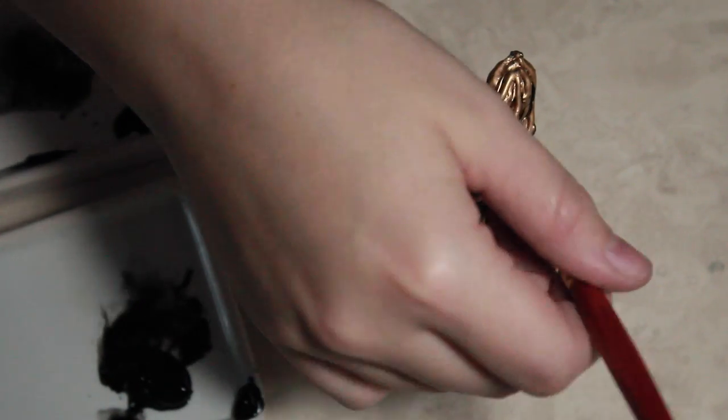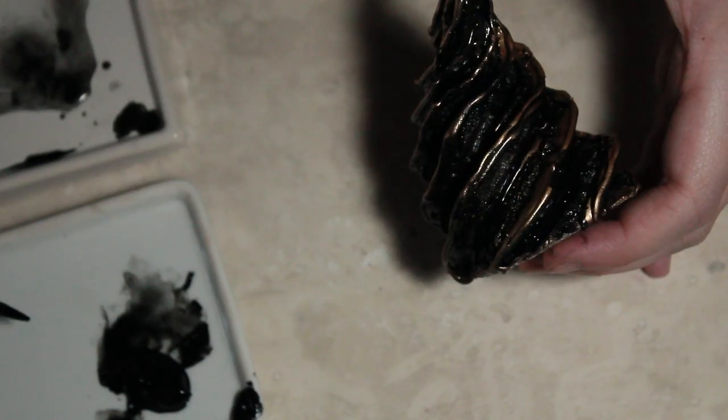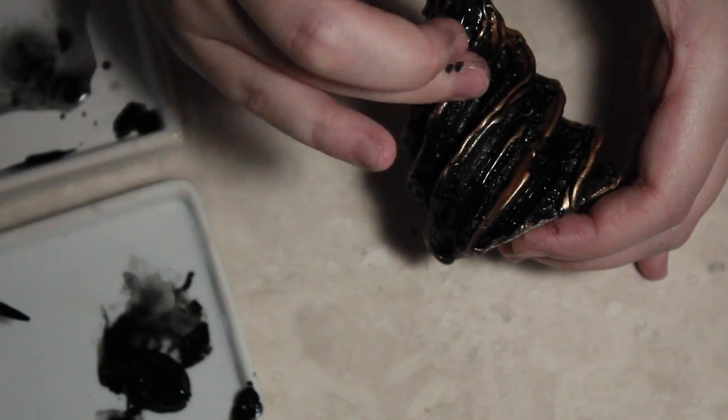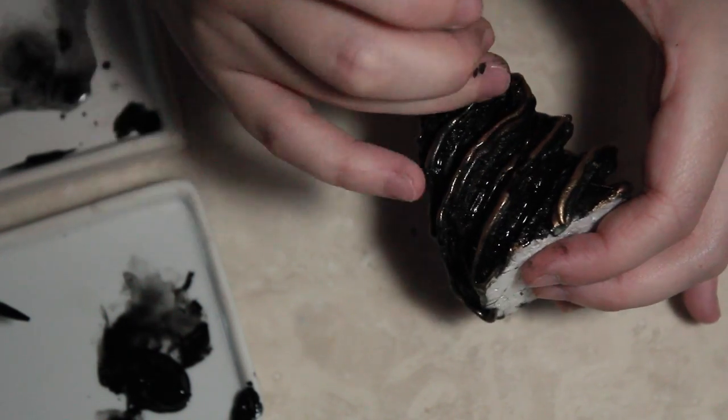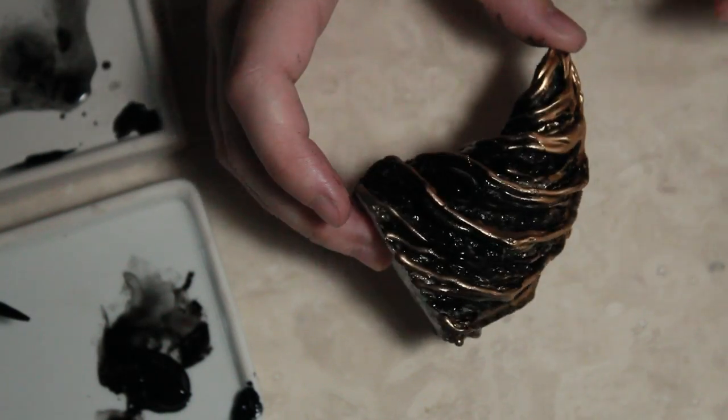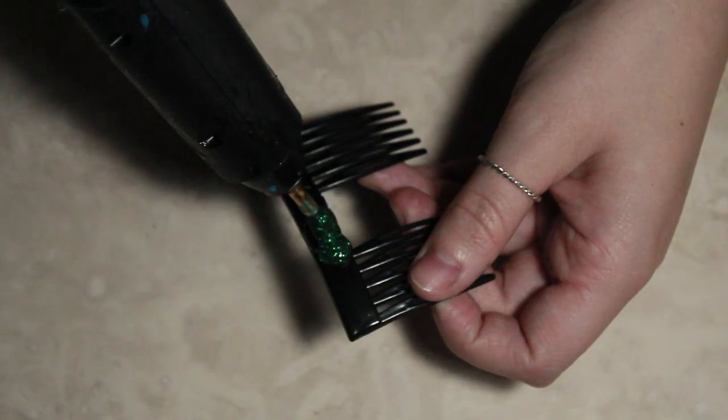Now because it's going to eat away at the styrofoam, some parts are going to be left exposed, and obviously you can't keep spraying because eventually you'll just have no styrofoam left. So you want to take some black acrylic, mix it with a little water so that it runs into all those holes and nooks and crannies. Then if it covers up the gold, just rub it away and it should scrape off very easily off the spray paint that you've already done.